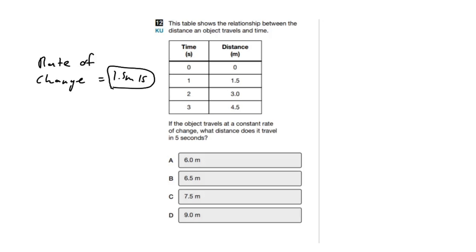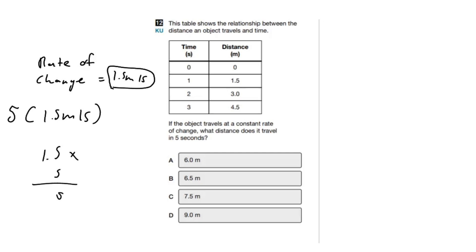With this rate of change, we can find what distance the object travels in five seconds. We don't need to extend the chart — just plug in five. So it's five multiplied by 1.5 meters per second. If you can't use a calculator, 1.5 times 5: five times five is 25, carry the decimal, gives 7.5. So our answer to this question is 7.5 meters.